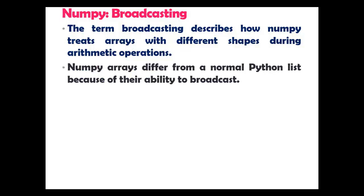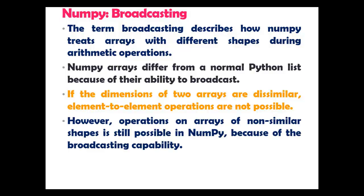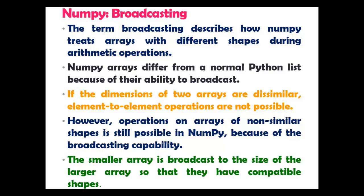NumPy arrays differ from a normal Python list because of their ability to broadcast. If the dimensions of two arrays are dissimilar, element to element operations are not possible. However, operations on arrays of non-similar shapes is still possible in NumPy because of the broadcasting capability. The smaller array is broadcast to the size of the larger array so that they have compatible shapes.